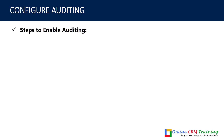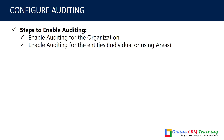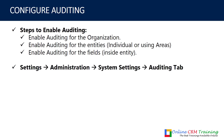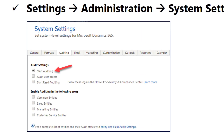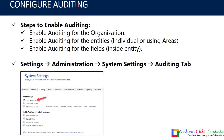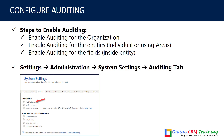To enable auditing in Dynamics 365: first, enable auditing at the organization level; then enable auditing for each entity individually — under the entity's areas you can enable the auditing feature; and then enable auditing for specific fields inside that entity. You can go to Settings > Administration > System Settings > Auditing tab to get started, and then proceed to configure at the entity and field levels.